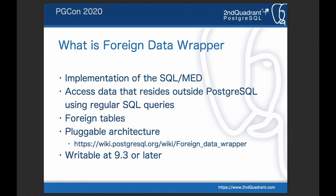The Foreign Data Wrapper is a plugin architecture, so you can find many FDW plugins and FDW implementations on the Foreign Data Wrapper page in the PostgreSQL Wiki. In addition, foreign tables are writable from version 9.3, so we can execute insert, update, and delete on foreign tables.